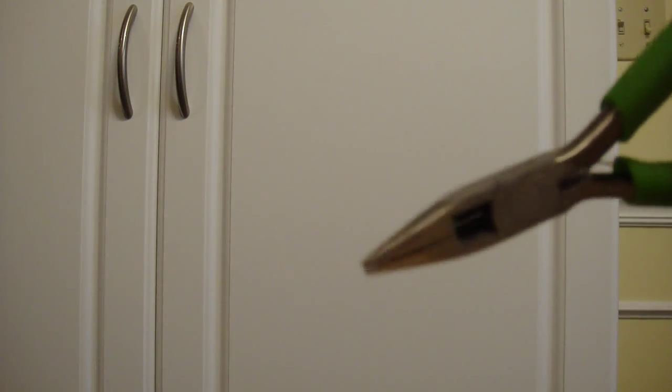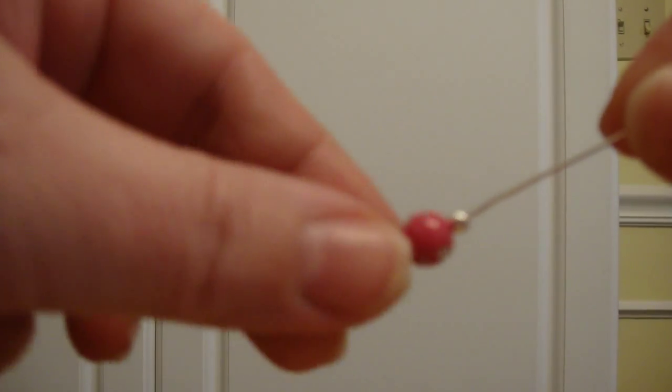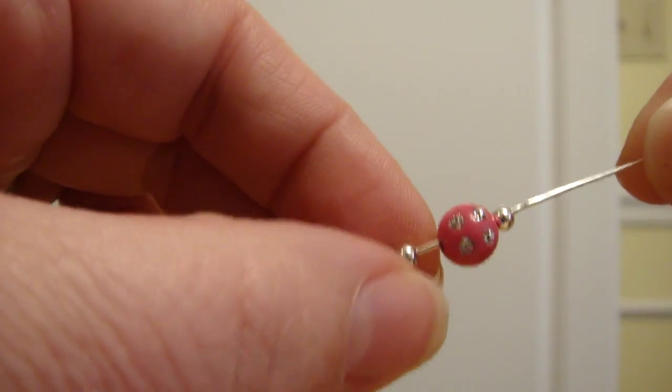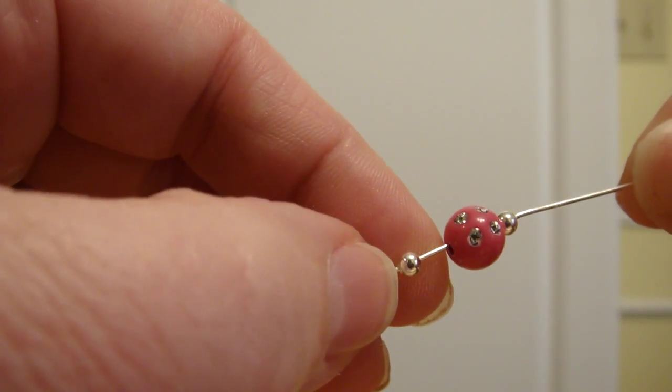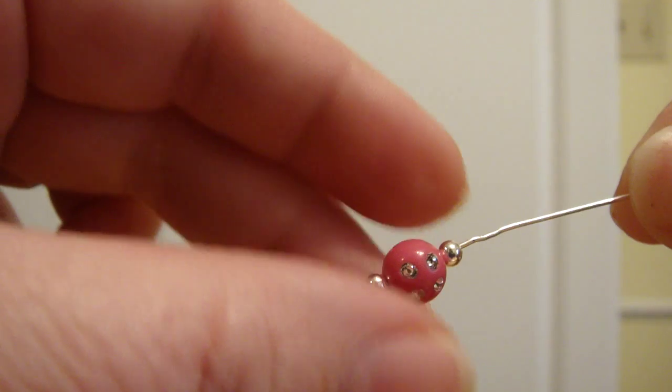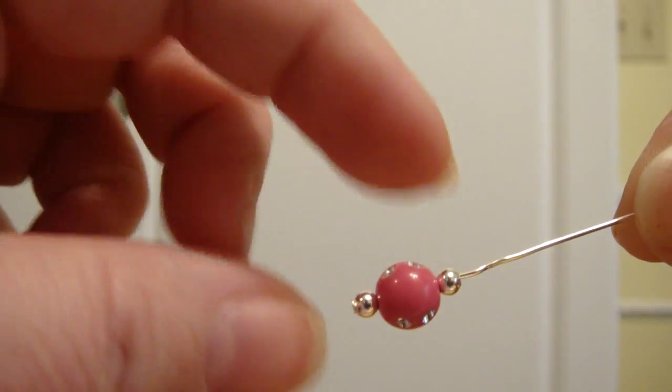I'm going to start with my bead here. I've already put it on my head pin. These little silver beads are 3.2 millimeter, and then I've got my 8 millimeter bling and then another silver bead up here.